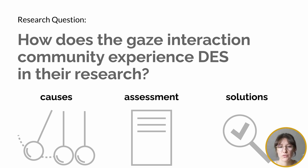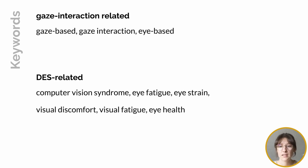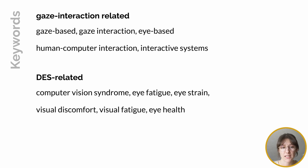We started with the definition of two sets of keywords: one including digital eyestrain related terms and one including gaze interaction related terms. As gaze interaction is closely coupled to digital device use in general, and causes that stem from one or the other are difficult to distinguish, we included a broader set of keywords in the interaction related set to also detect general problems with digital eyestrain in interactive systems. In the paper, we report the results of our analysis following the PRISMA process for reporting systematic reviews.